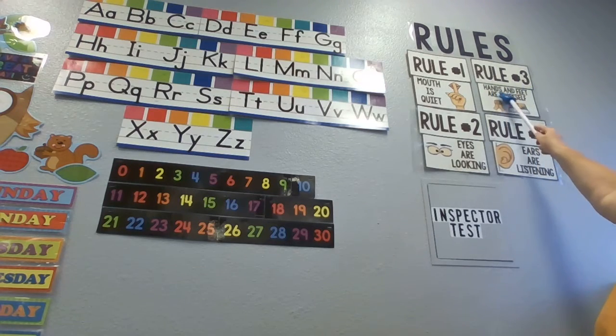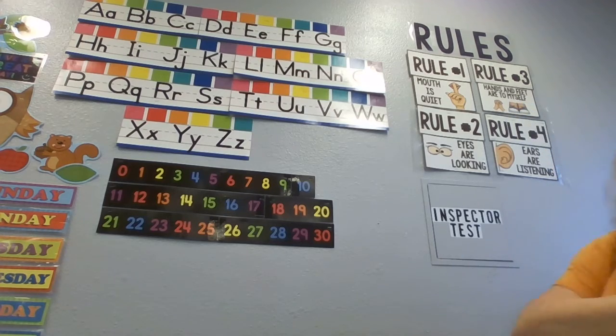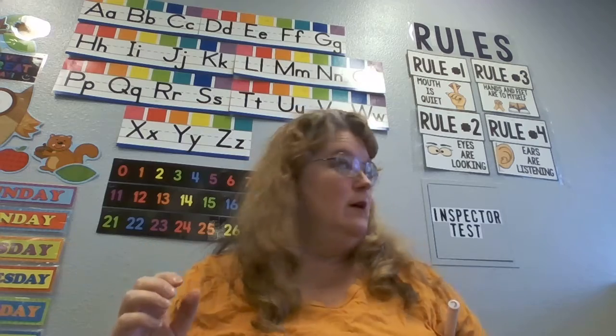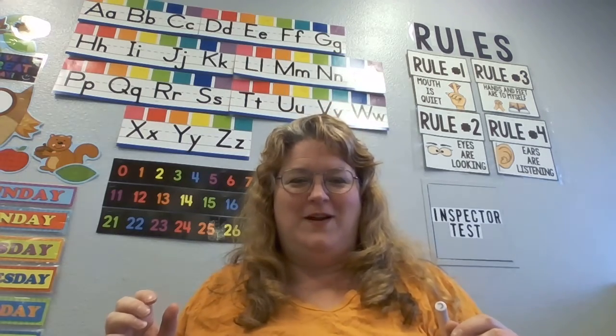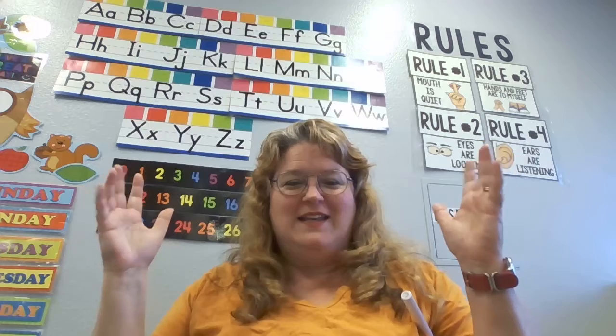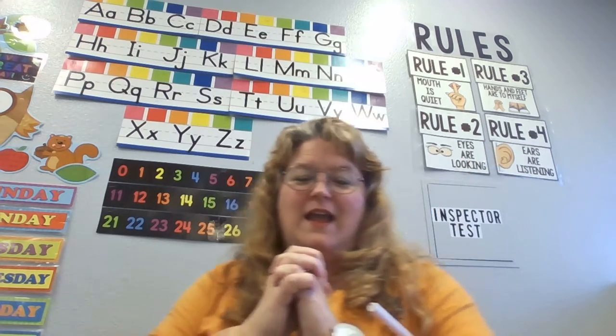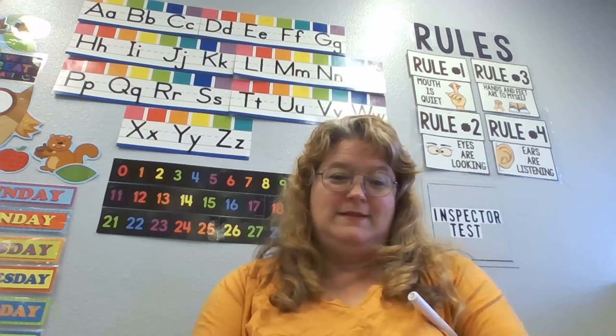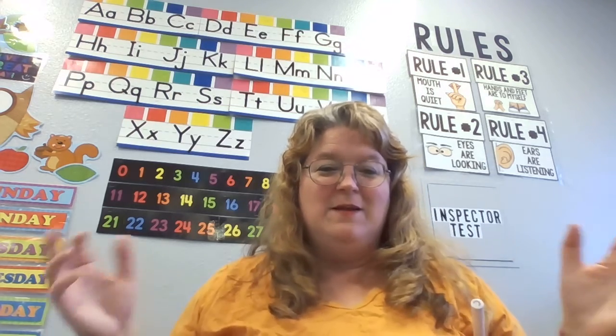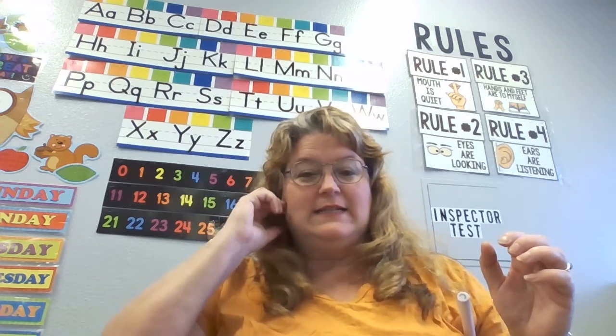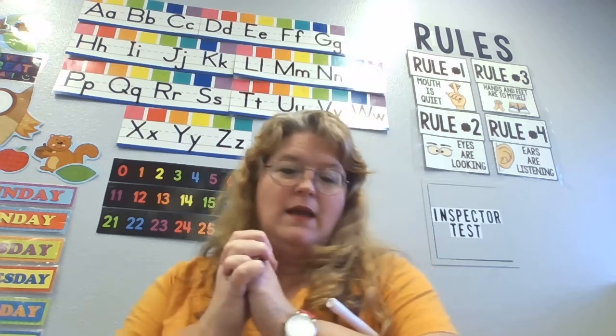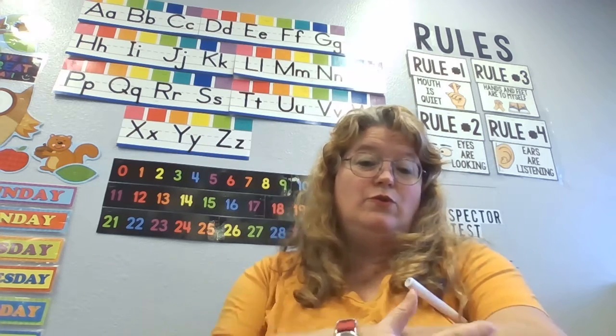Rule number three. Hands and feet are to myself. There's some hands. There's some feet. All right. Let's do our little rhyme for that. I keep my hands and my feet to myself. All right. That's not a rhyme. It's a saying, right? But it's a really, really good one. And it's something really, really important to learn. Okay. So let's say it again. Ready, set, go. I keep my hands and my feet to myself.